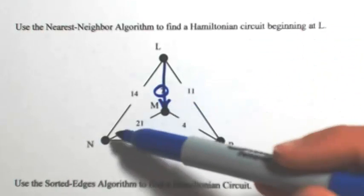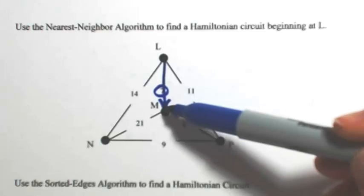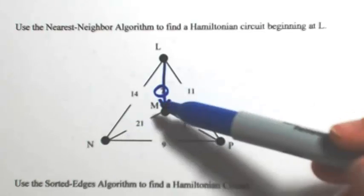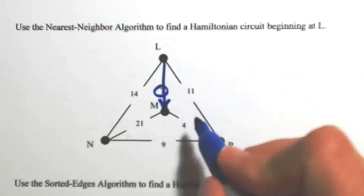From M, I can either go to N or to P. So between the two, I got a 21 and a 4, so 4 is the least cost. I'm going to use that one.